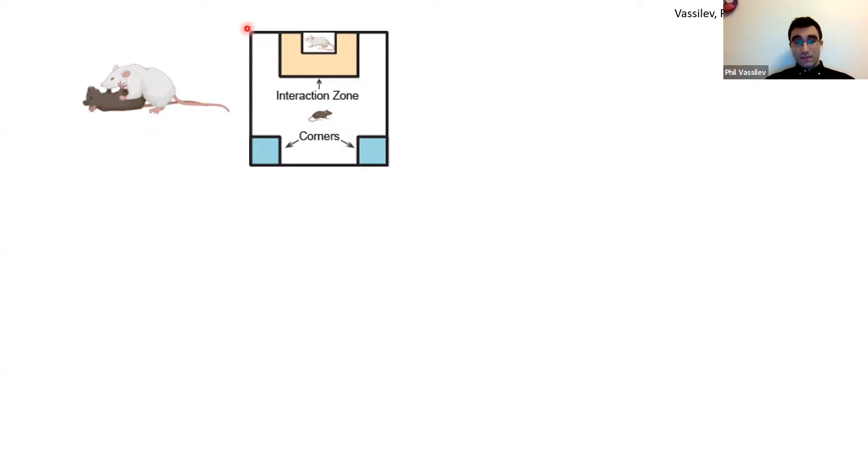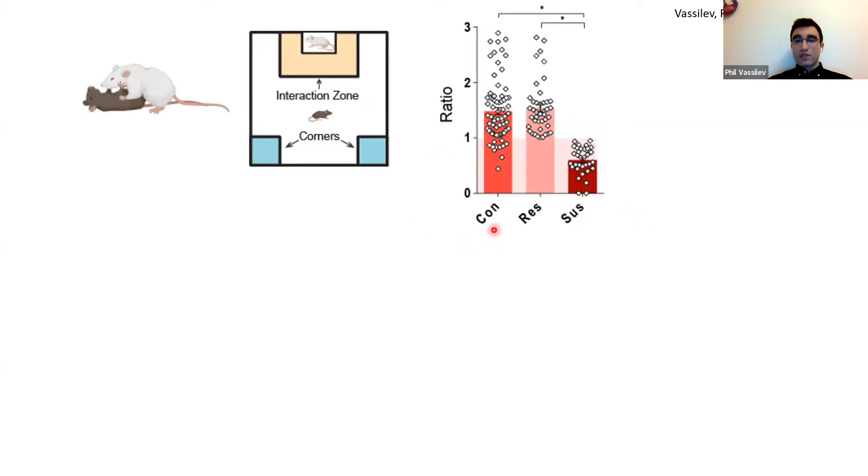After this procedure we quantify the social interaction of mice exposed to this social stress or control mice using the social interaction test. We place control and experimental mice in an open field and measure time spent in highlighted areas, then introduce an unfamiliar mouse and measure time spent again. We take the ratio of time spent with or without the social target. Control mice have interaction ratios higher than one, while defeated mice break into two groups: those that avoid the social target and those that, despite negative experience, behave similar to controls. That is what we define as resilient.